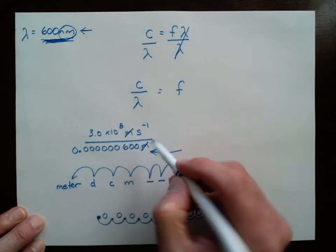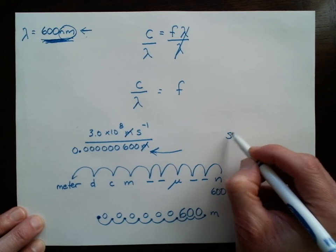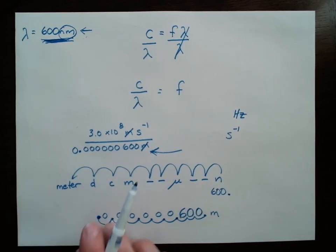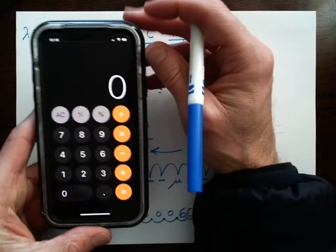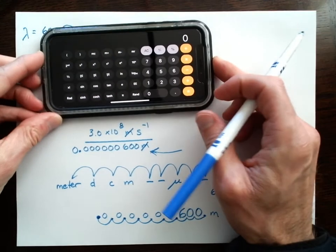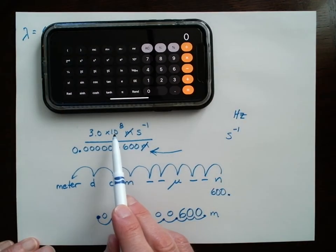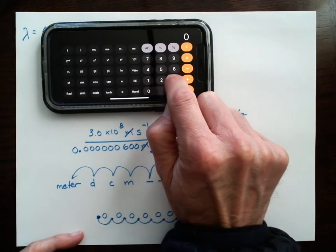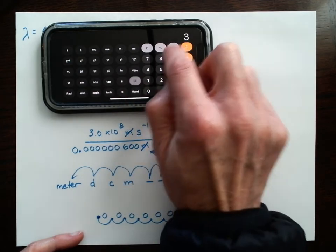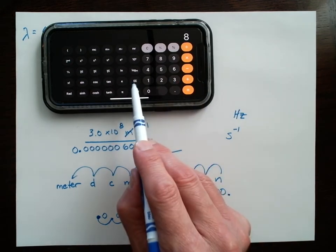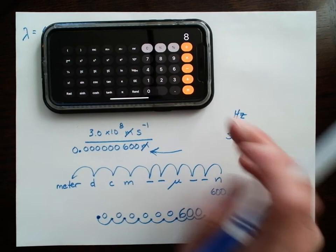Now, this meter cancels this meter, and my unit is inverse second. That's the same thing as a hertz. So I've got the correct frequency unit. Now I need to do the calculation. So to do the calculation, I'm going to take my cell phone calculator. I'm going to turn it this way and then a bunch of scientific functions show up. I do this so I can do scientific notation calculations. So to do 3 times 10 to the 8th, I'm going to push 3, E, 8. And when I push those buttons in my head, I say 3 times 10 to the power of 8.